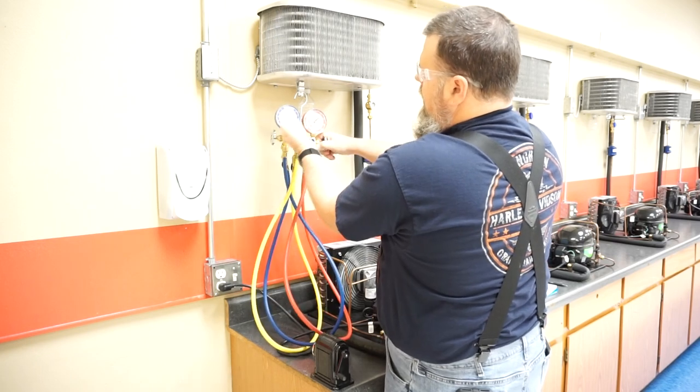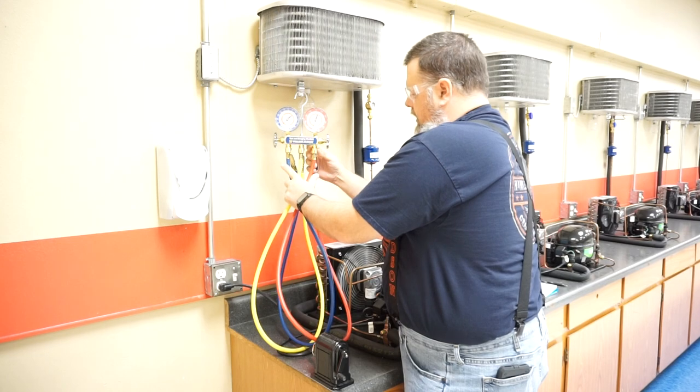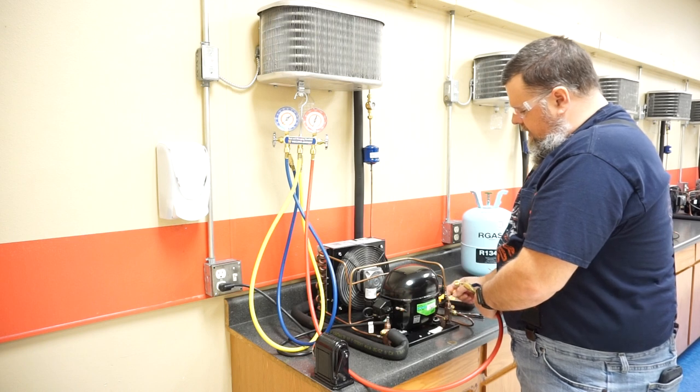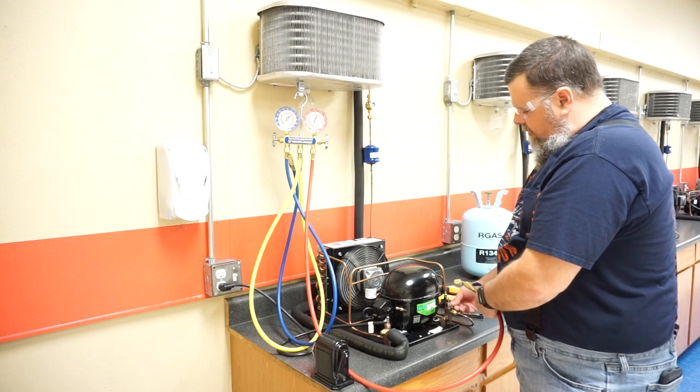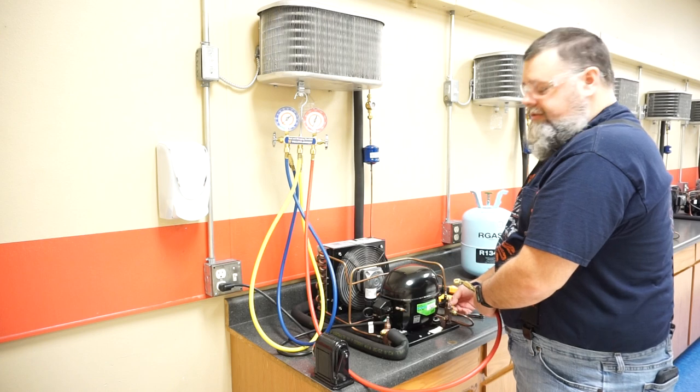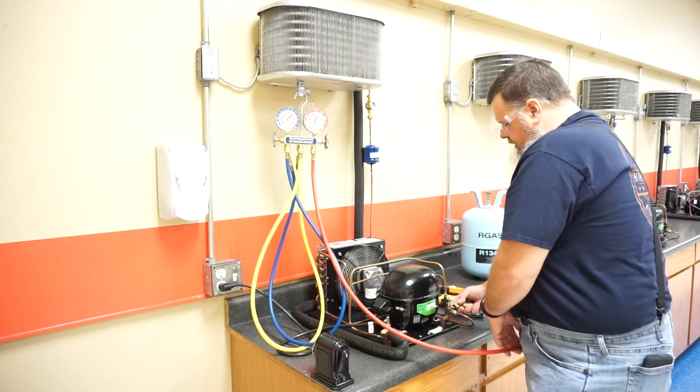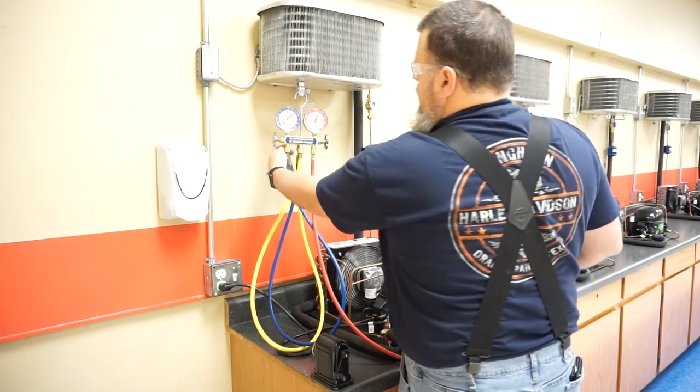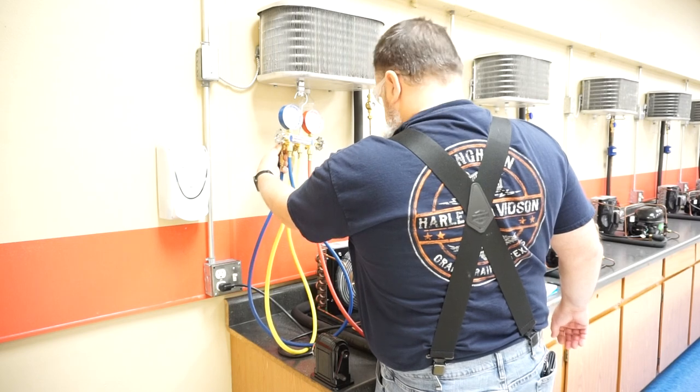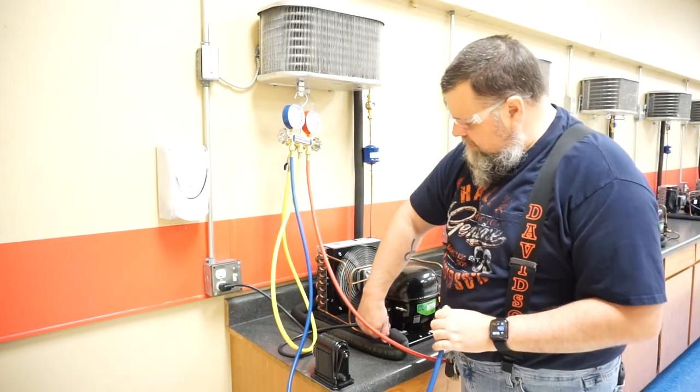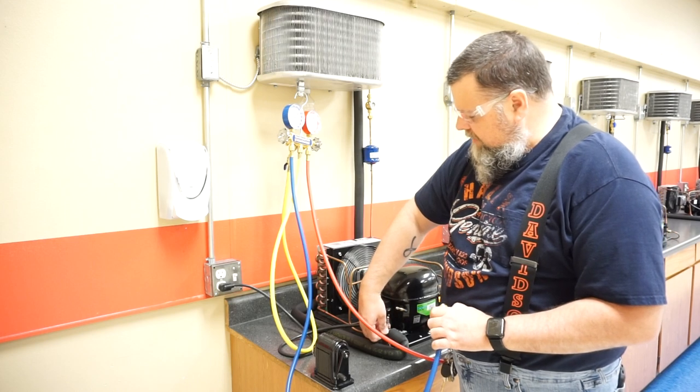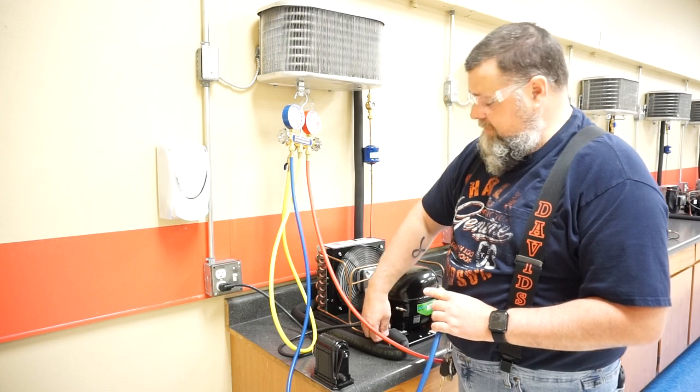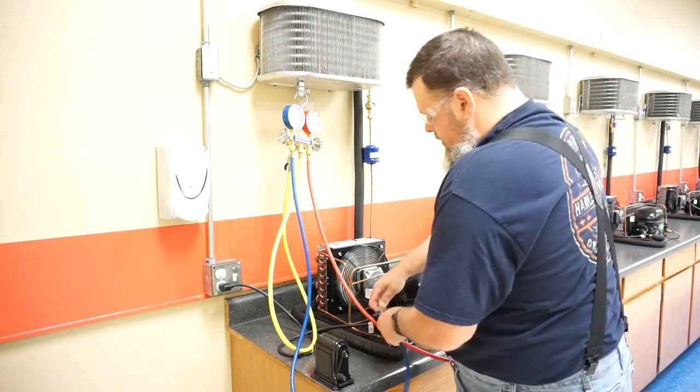I have my compound gauge and my high pressure gauge. Let's go ahead and hook up here. Check to see this is in the back seated position. I don't see anything or feel any pressure or hear it, so I think it's safe we can go ahead and take that off. Now let's hook up our suction side. Same thing, I want to be careful when I'm taking this off. If I hear any kind of hiss or feel pressure or see refrigerant, I need to make sure that this stem is seated well.